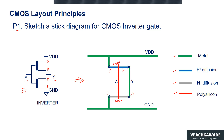Polysilicon, indicated by the red line, can be drawn over the active areas with some overlap as shown here. As soon as the polysilicon is drawn, its width defines and separates the source and drains of the transistors. The source of PMOS is tied to VDD, and the source of NMOS is tied to ground. The drains of the transistors are tied together and connected through the metal line, which is the output of the circuit.